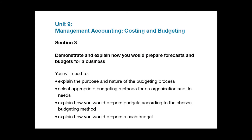Section 3, bullet point 1, is about the importance of managing operational income and expenditure activity in line with organisational strategies and objectives, which includes forecasting, planning and monitoring over a set period of time. Give an example from your own or a selected organisation of this budgeting process in action.